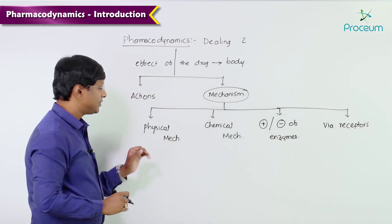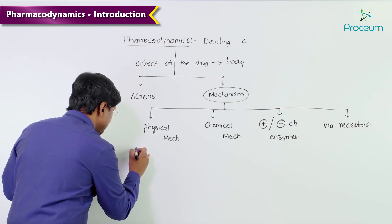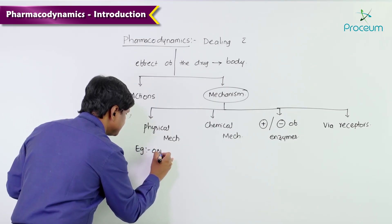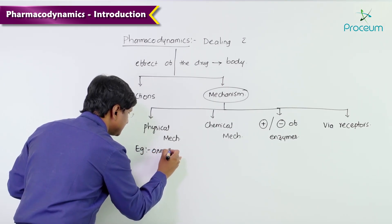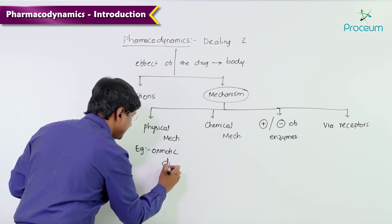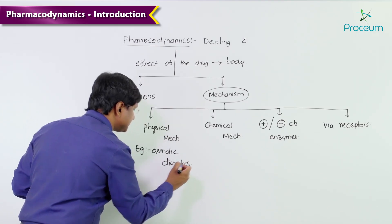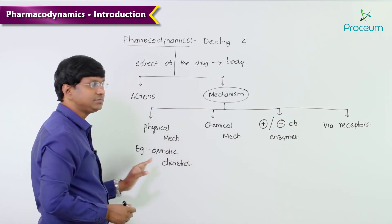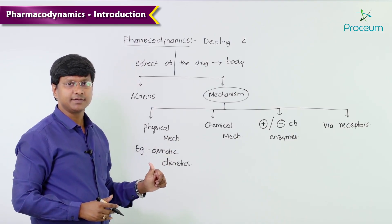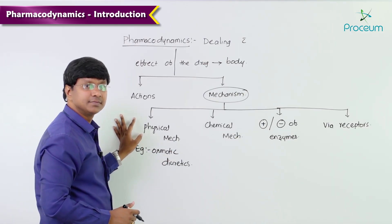For the physical mechanism, the example is osmotic diuretics. These mainly include mannitol, and they are mainly used for reducing intracranial pressure. They act by the physical mechanism.